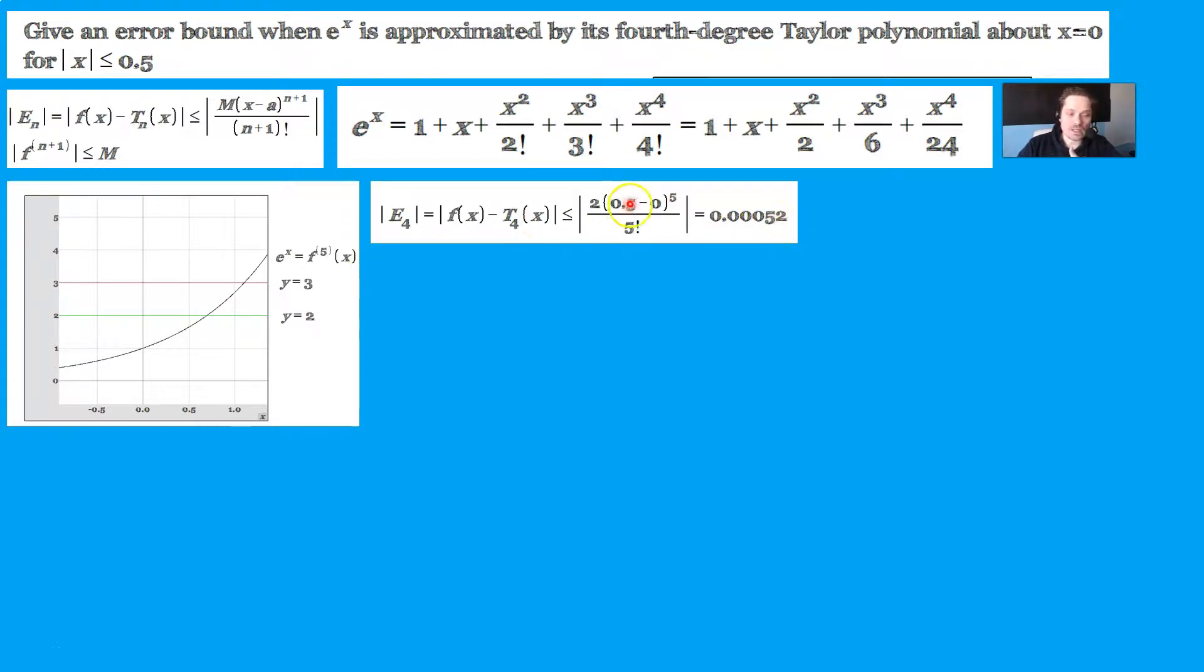What if you use not 2 in this position, but instead you use 3 right here? Why not? Is it going to be the same thing? No, it won't be the same thing. Take a look. So you're going to have, again, f of x minus the 4th degree polynomial would then be less than or equal to an absolute value. And right here, instead of using 2, I'm using 3. And then it says 0.5 minus 0 to the 5th still over 5 factorial. You punch this in and you calculate the value to be 0.00078. As you can see, that's different compared to the previous one.